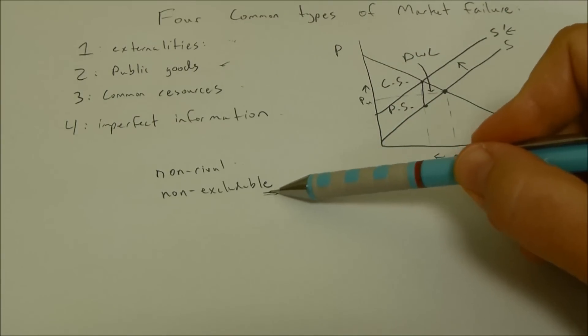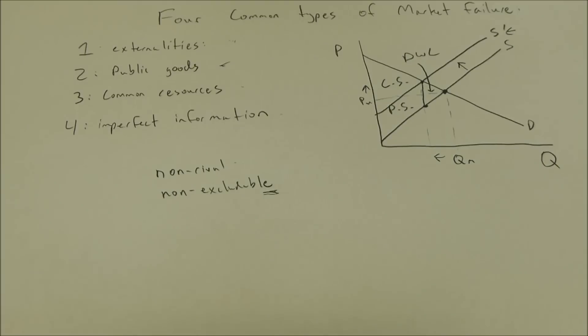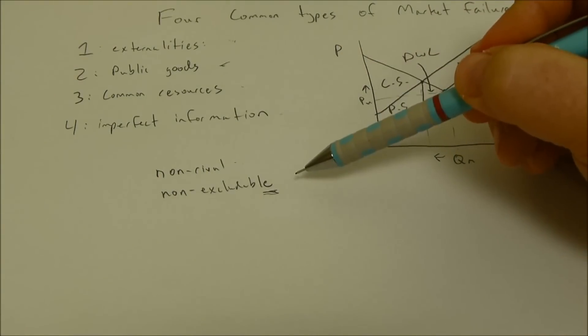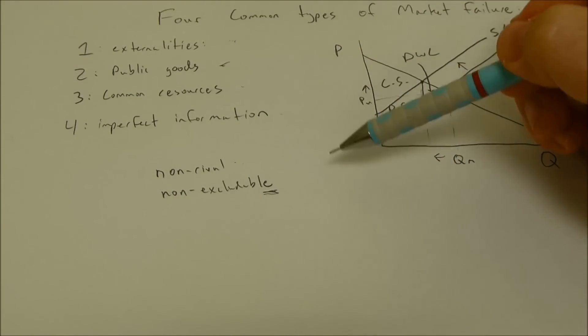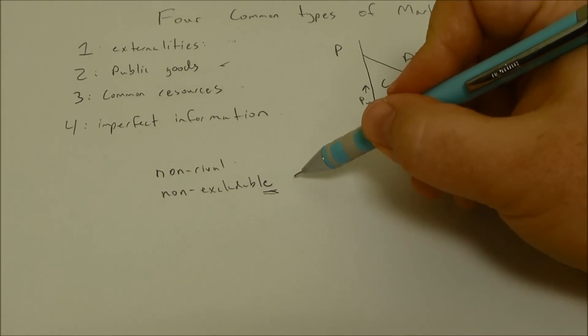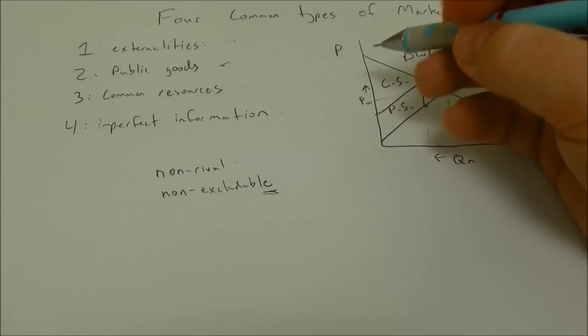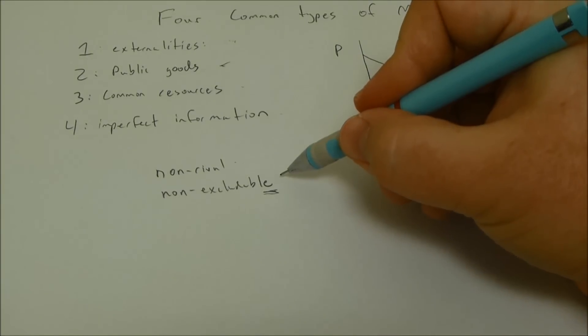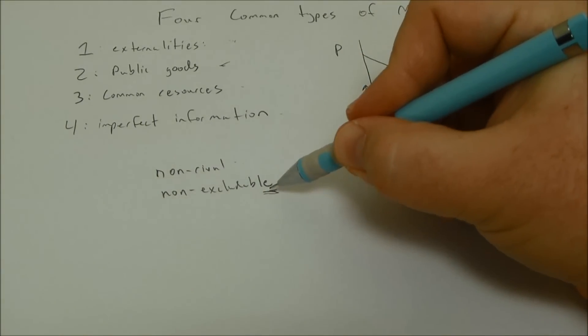Now the important one, non-excludable. A public good can't be excluded from people. So let's go back to our apple example. A store can exclude people from consuming the apple by charging them or sicking the police on them if they try to steal it. So an apple is excludable.